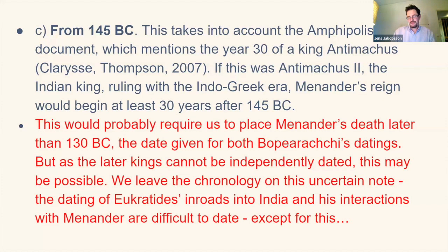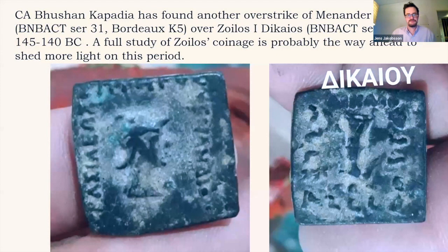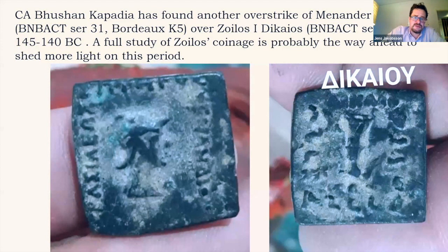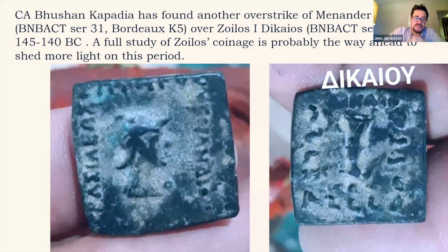We leave the chronology on this uncertain note, because many more studies need to be done on this very complicated period. I hope to continue such a paper one day, starting with a small paper presenting some new coins. C.A. Bhushan Kapadia is a very keen numismatist who has found another overstrike of Menander over Strato I — who ruled at the last period of this very confused conflict — with Strato's epiclesis Dikaios still visible. This is the fourth overstrike of Menander over Strato and is very good for dating Menander's coinage changes.